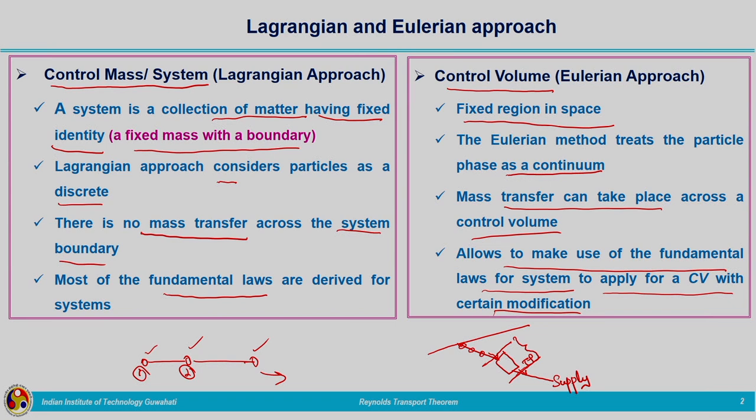In the Lagrangian approach, the observer is tracing the fluid particle. But in the Eulerian approach, we do not give emphasis to a single particle; instead we give emphasis to what happens within a fixed frame of reference where we need to do the fluid flow analysis.